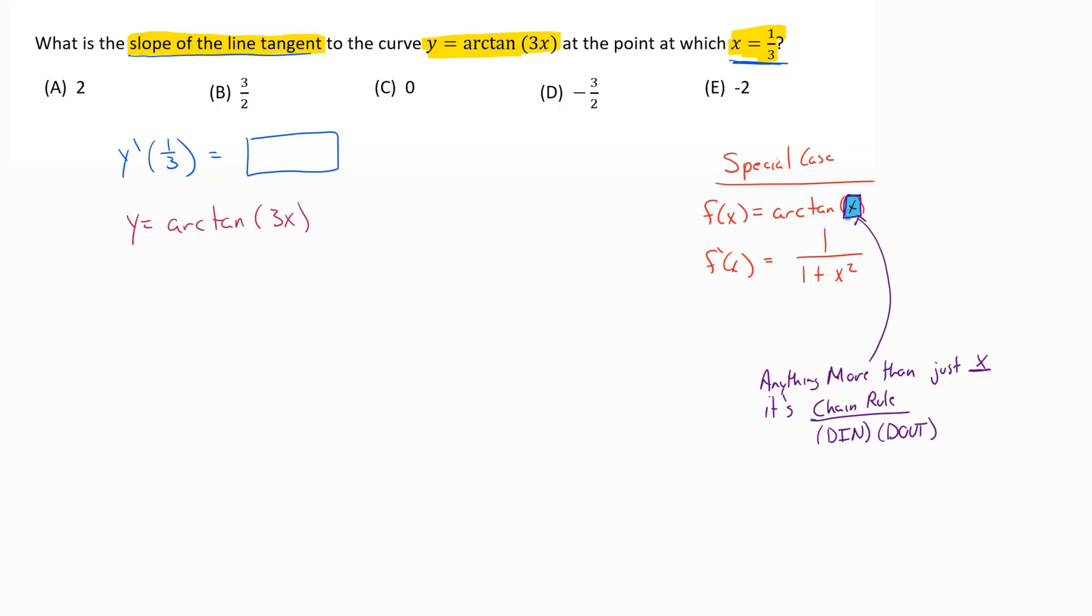Coming over here and looking at our problem, we have that happening, right? We've got a 3x sitting inside there. And so we definitely need to follow our chain rule process, our chain rule derivative. So like I told you earlier, it's d in, d out is the recipe I have memorized.